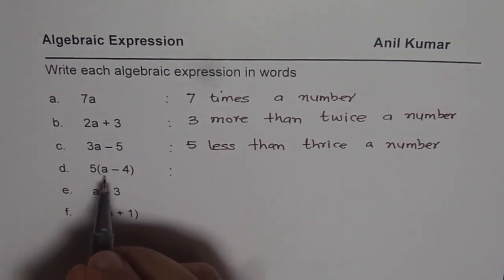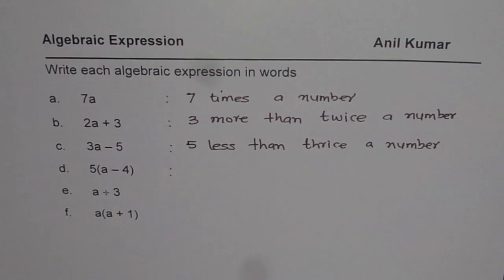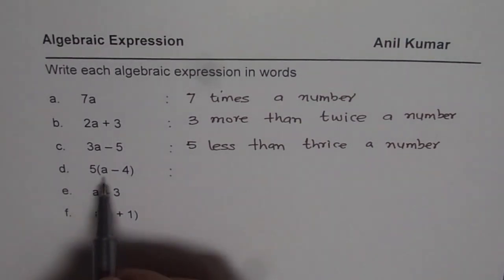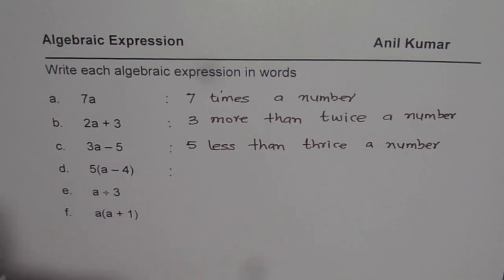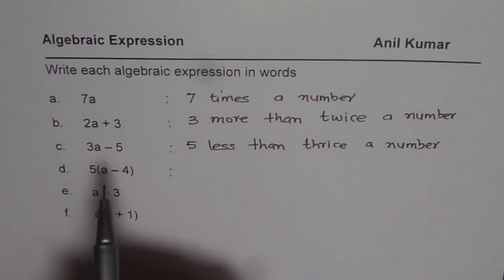5 times a minus 4. Now in this, the operation a minus 4 will be performed first and then we have to multiply by 5. So think about it, how should we write this? So it is kind of different from the one which we did.